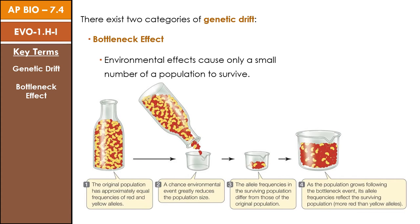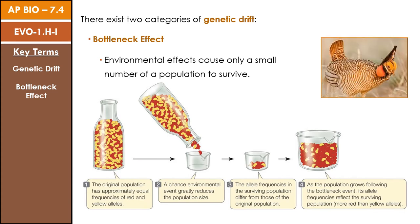An example of a bottleneck effect in real life is that of the prairie chicken in Texas. Prairie chickens had a very low genetic diversity and were nearly wiped out following a catastrophic event.